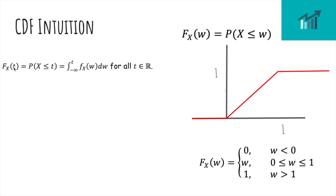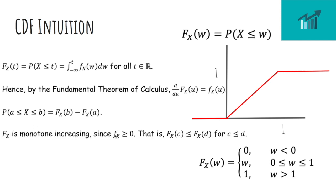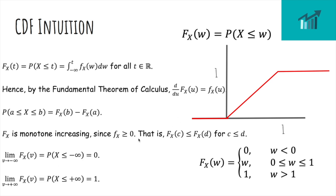The CDF at t is the probability x is less than t, so it's the integral from negative infinity to t of the density function. By the fundamental theorem of calculus, the derivative of the CDF is the PDF. The probability that x is between a and b is the probability less than b minus the probability less than a. The CDF is always monotone increasing because we're integrating a non-negative function, so for any c less than d, the probability x is less than c is less than the probability x is less than d. As v goes to negative infinity, the CDF goes to 0, and the right-hand limit as v goes to infinity is always 1.